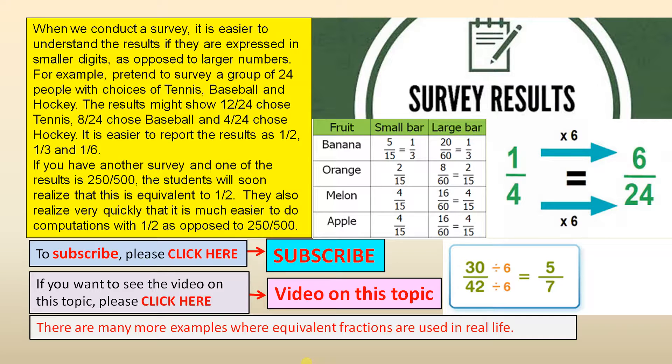For example, pretend to survey a group of 24 people with choices of tennis, baseball and hockey. The results might show 12 out of 24 chose tennis, 8 out of 24 chose baseball and 4 out of 24 chose hockey.